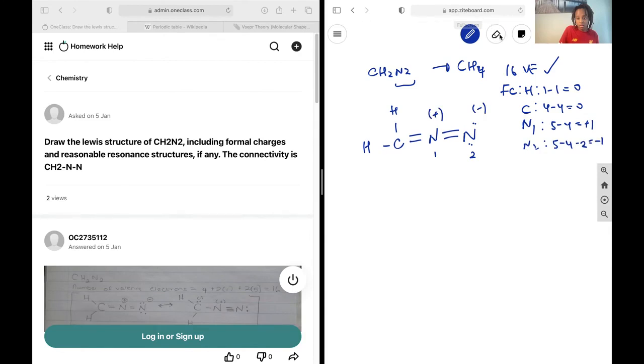The question mentions resonance structures. So what that means is can we move any of the electrons, either in lone pairs or in these double bonds, into a configuration that is different from this one but still maintains this formal charge of zero and still maintains the 16 valence electrons? And indeed that can be done.